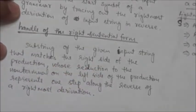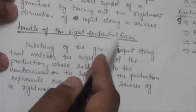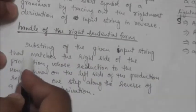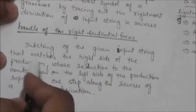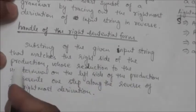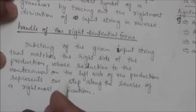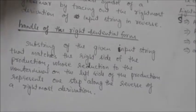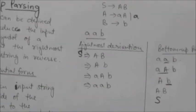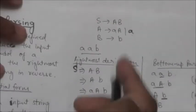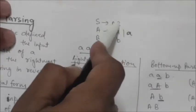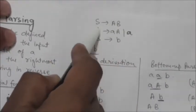The handle of a right sentential form is a substring of the given input string that matches the right side of a production, whose reduction to the non-terminal on the left side of the production represents one step along the reverse of a rightmost derivation. This will be more clear after the following example. Consider this grammar with production rules: S → aB, A → aA, A → a, B → b.